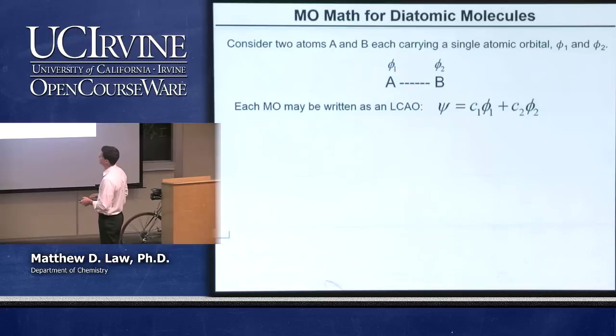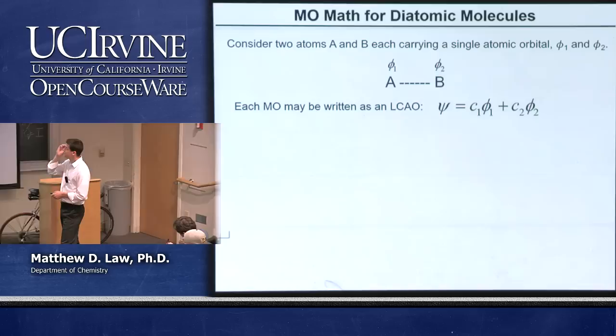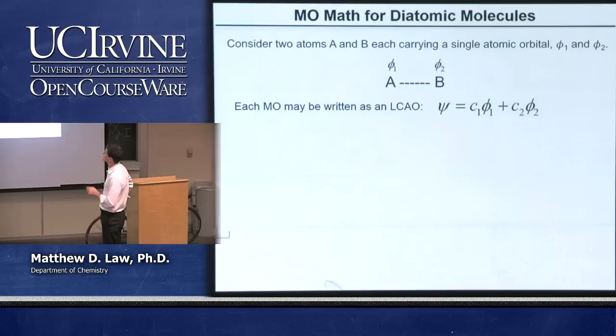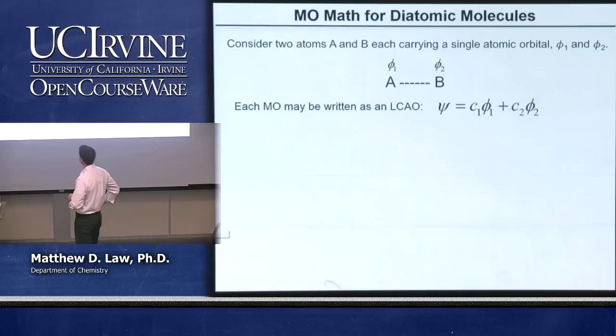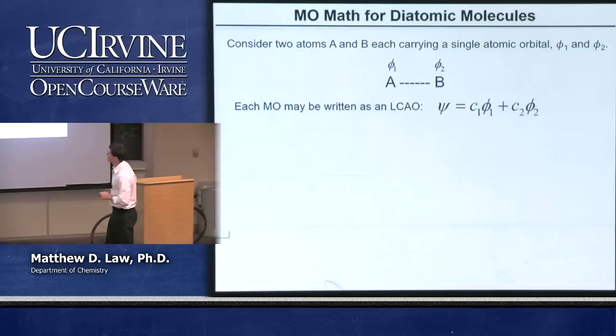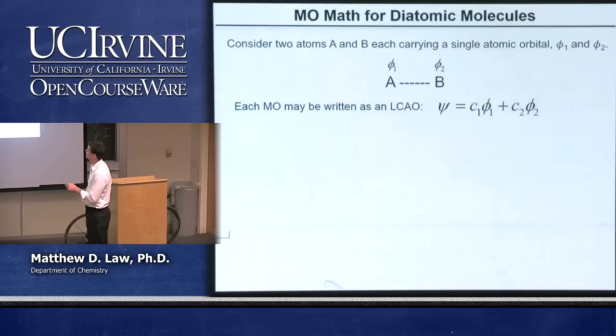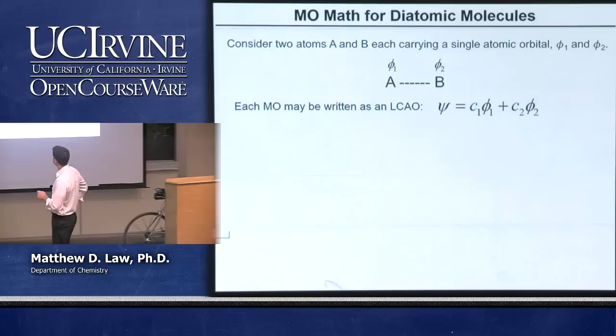Let's build up the machinery. Consider the simplest case: two atoms, A and B, each carrying a single atomic orbital — orbital 1 and orbital 2. We can write molecular orbitals as: psi = C1·phi1 + C2·phi2. C1 and C2 are the weighting coefficients for atomic orbitals 1 and 2. What we're interested in doing is determining what these coefficients are — if we can determine C1 and C2, we have the full equation for the molecular orbital.